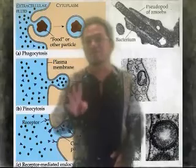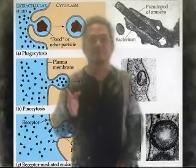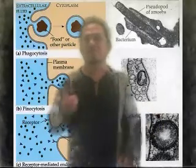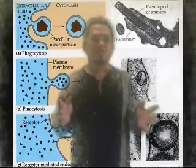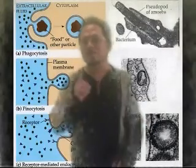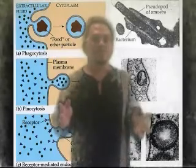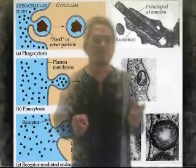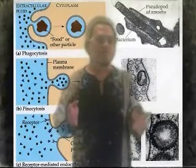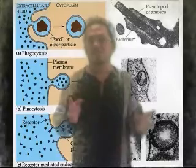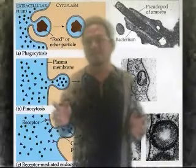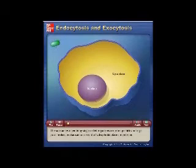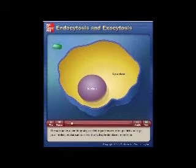Difference number four is phagocytosis and pinocytosis. Both phagocytosis and pinocytosis form from the endocytosis process. In this process, the cell membrane forms a small structure resembling a bladder. Phagocytosis is cell eating and pinocytosis is cell drinking. This occurs because the materials are too large to get through the cell membrane. Phagocytosis and pinocytosis only occur in animal cells.